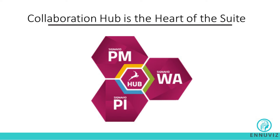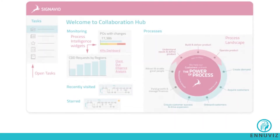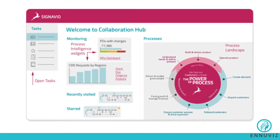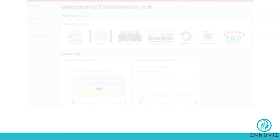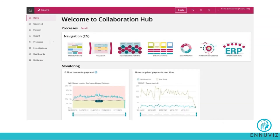Processes are published in the Hub in order to provide process transparency and, more importantly, to provide a navigating structure for all employees through the company's business processes. As a process-focused interface, the Collaboration Hub combines different process-related information, and this can even be user group specific.